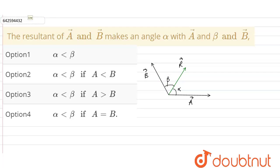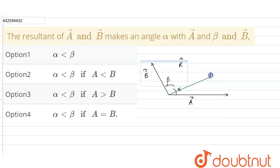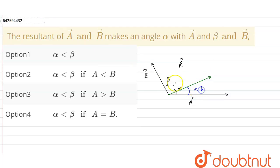When the magnitude of vector A increases, the resultant vector will get shifted towards the A vector. This results in alpha getting decreased and beta getting increased.